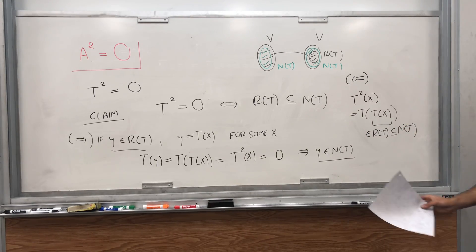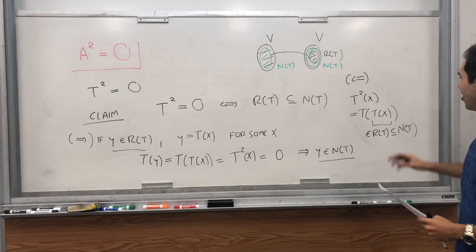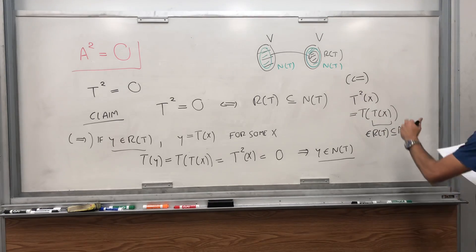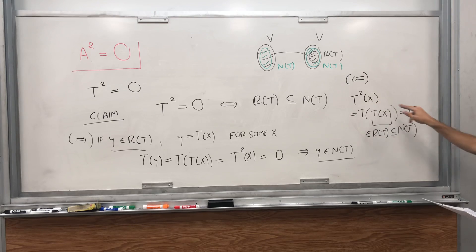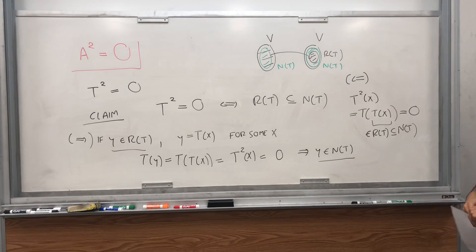But what does it mean for something to be in the null space? It means T of that something is zero. In particular, T of that null space vector is zero, so this is zero. And therefore, T squared of X equals zero for all X. Therefore, T is the zero transformation.